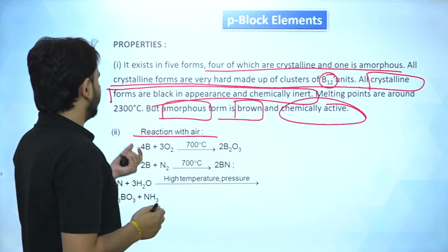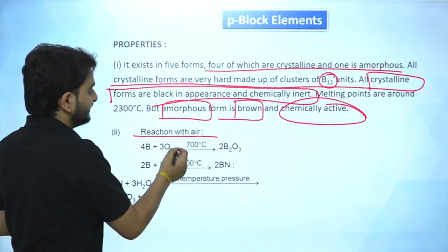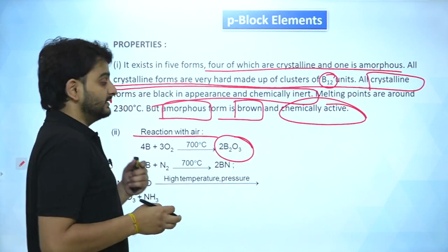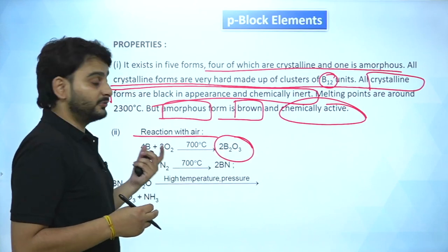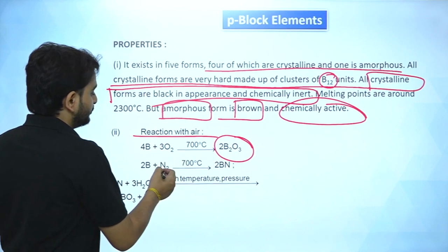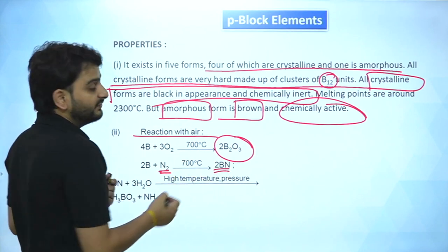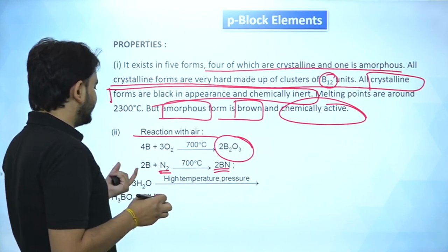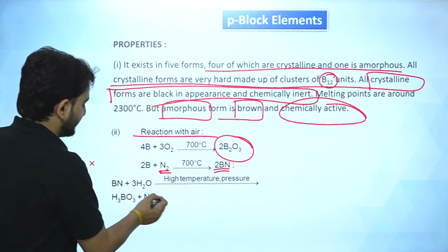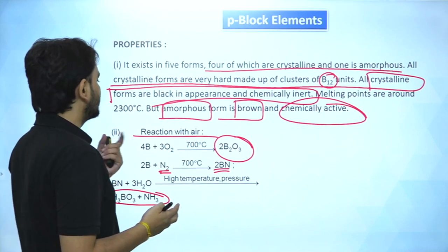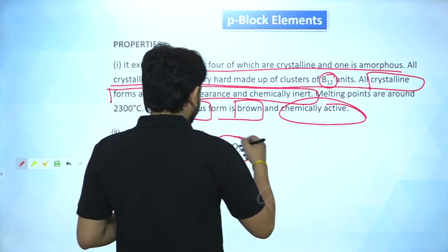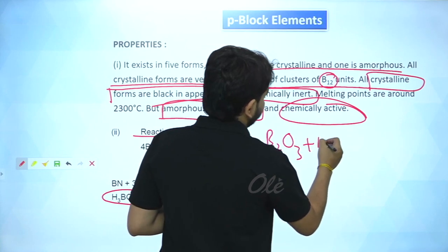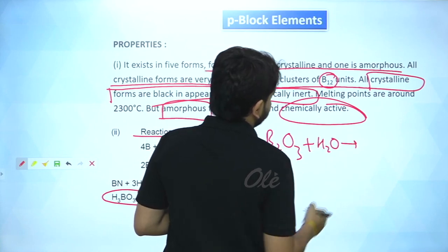Amorphous boron reacts with air at around 700°C to form B₂O₃. Treated with N₂ at high temperature, it forms a nitride. When this nitride is hydrolysed at high temperatures, H₃BO₃ and NH₃ are produced. Similarly, B₂O₃ being the anhydrous oxide, when treated with H₂O, again gives H₃BO₃.